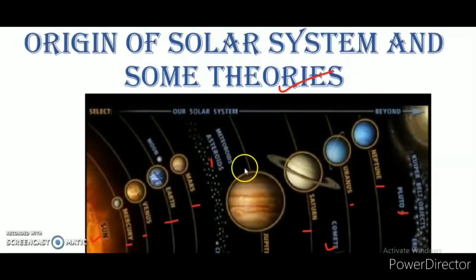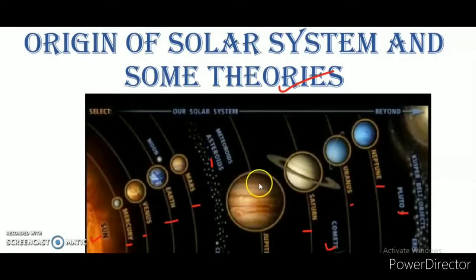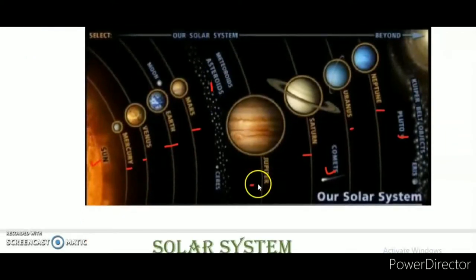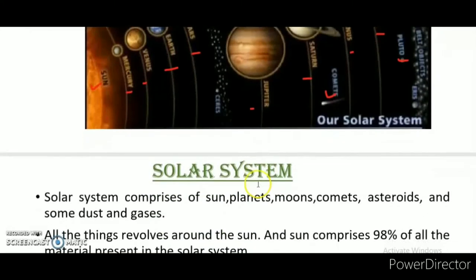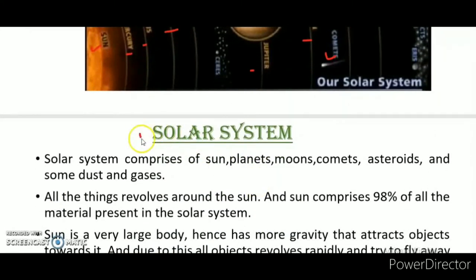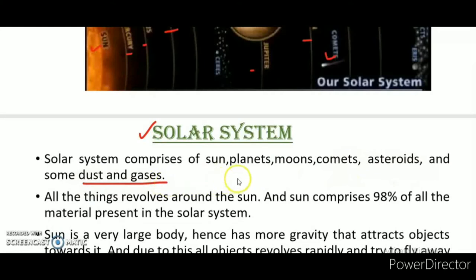We will discuss how basically the solar system formed and how its formation takes place. The solar system comprises of the sun, planets, moon, comets, asteroids, and some dust and gases.